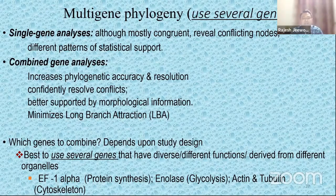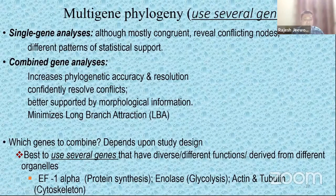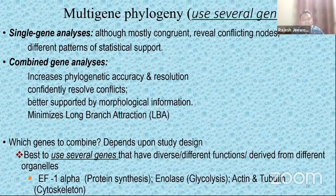With protein and combined gene phylogenies, you tend to reduce those problems. When it comes to which genes to combine, it depends upon your study. You can use ribosomal DNA and protein-coding genes such as those involved in protein synthesis, or those involved in glycolysis, or sometimes even beta-tubulin genes. It depends upon what you basically want to do and at what taxonomic level you want to investigate your phylogeny.